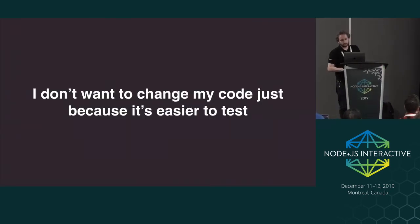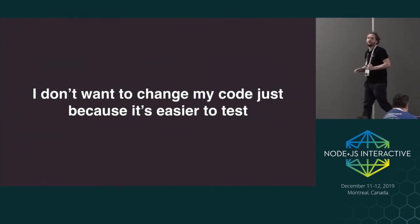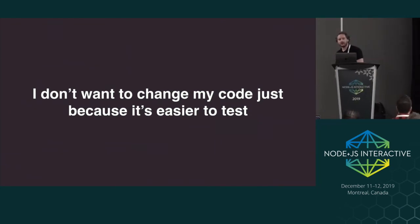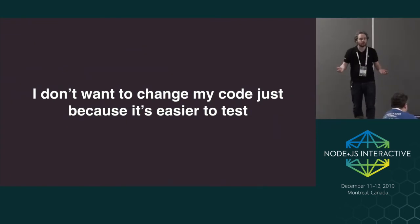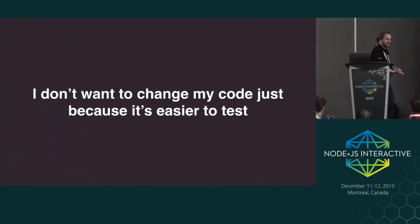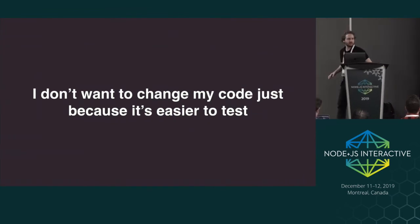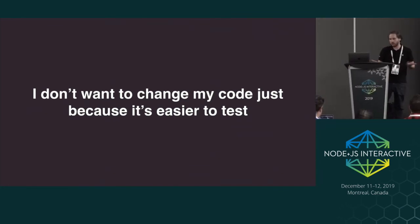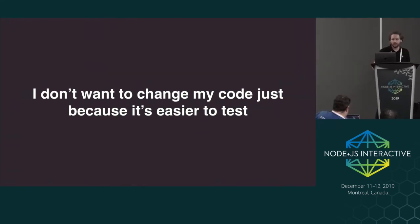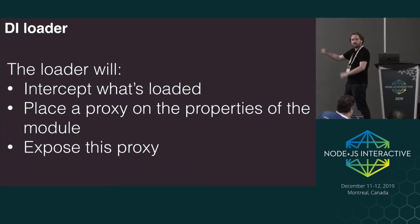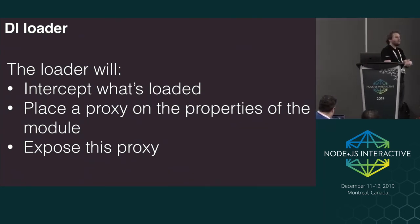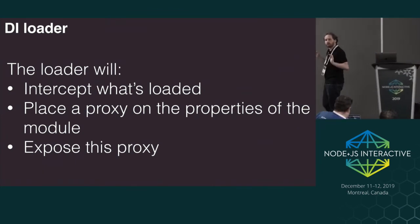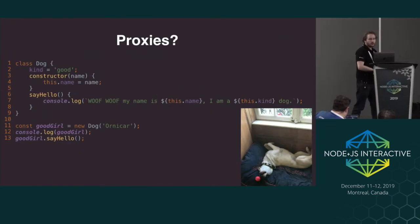Testing code is sometimes painful, and often people change their code just to make it easier to test. I don't like changing my code just for the sake of making things easier to mock. I want to write code that is performant, easy to maintain, and makes sense — and then find a way to test it. I don't want the constraint of 'maybe I should pass that as an argument because it will be easier to mock later.' Your code should make sense to you, not to arbitrary machines. So we'll create a loader that intercepts imports and replaces every export with proxies.